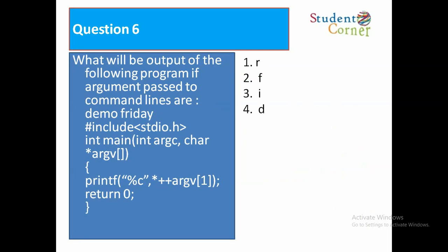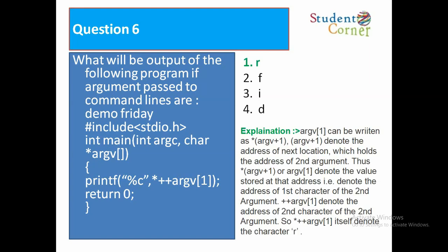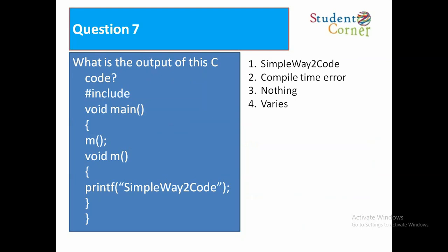Question 6: What will be the output if command line arguments are demo, friday? Program: #include stdio.h, int main(int argc, char* argv[]), printf("%c", *++argv[1]). Option 1: arg. Option 2: F. Option 3: I. Option 4: D. Explanation: argv[1] denotes the address of the first character of the second argument. ++argv[1] denotes the address of the second character of the second argument. So *++argv[1] denotes the character 'r'.